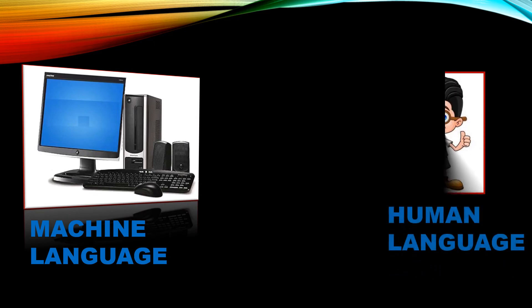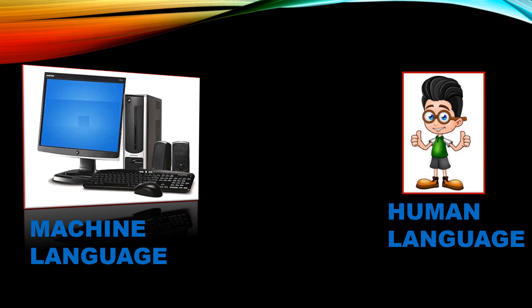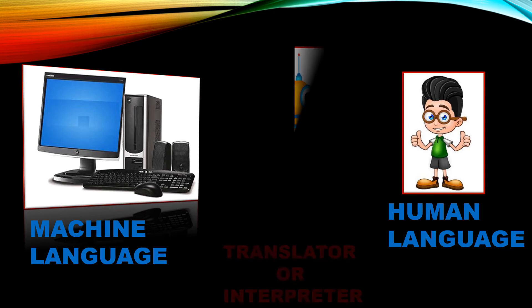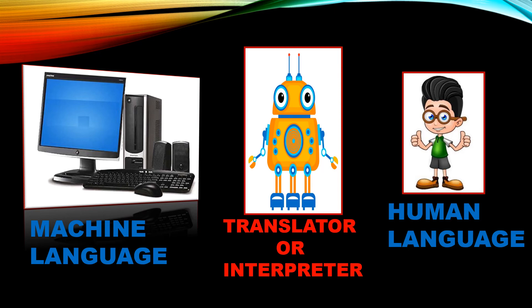Similarly, in the case of computers and their users, a computer understands machine language, whereas humans understand human language. A computer cannot understand human language and humans cannot understand machine language. They need a translator or interpreter which converts human language into machine language and machine language into human language.